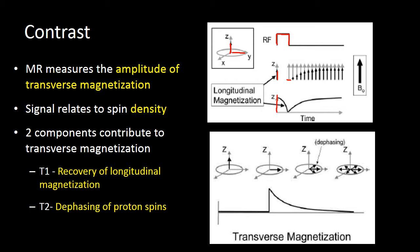But over time, protons — based on their local environments and what types of bonds and tissues they're located in — will start to slowly reorient with the Z-axis of our magnet. The time it takes for recovery of that longitudinal magnetization, or the time it takes for protons to realign with the Z-axis, is called your T1 recovery time.